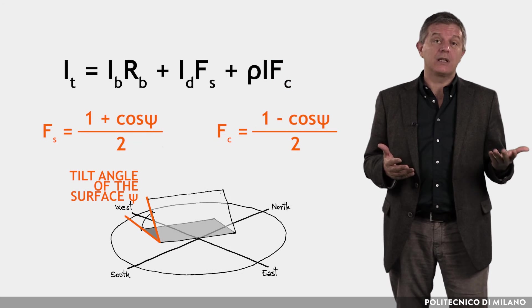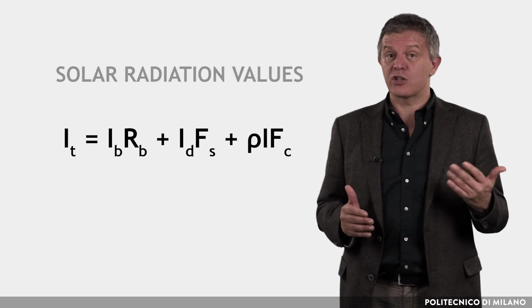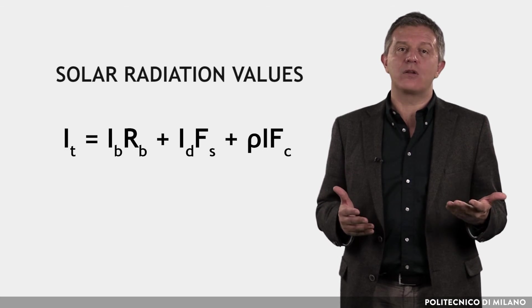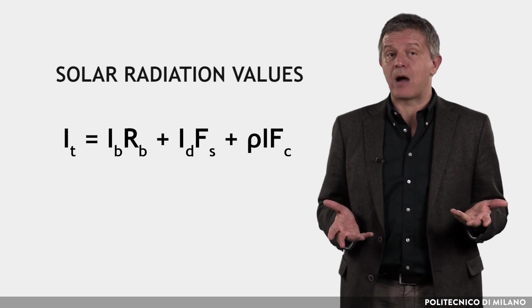Both factors depend on the tilt angle of the surface. The formulas shown until now allow to calculate the instantaneous values of solar radiation, namely the values of irradiance - the radiative power.